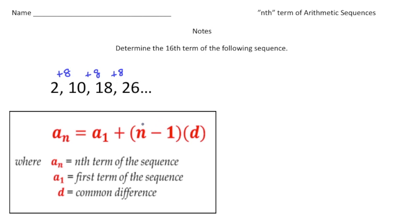That formula is right here: a sub n equals a sub 1 plus (n minus 1) times d. Let's identify the key parts of this formula.